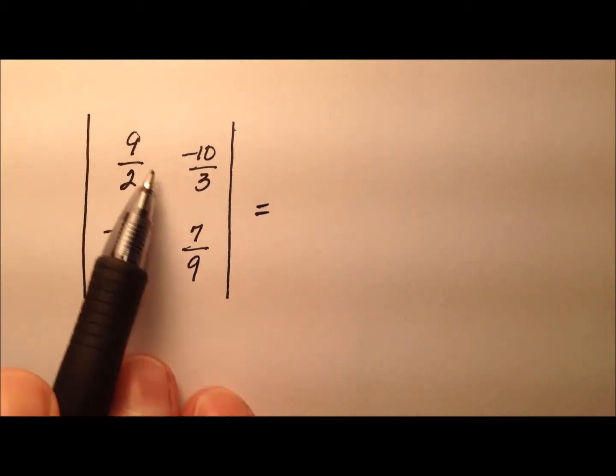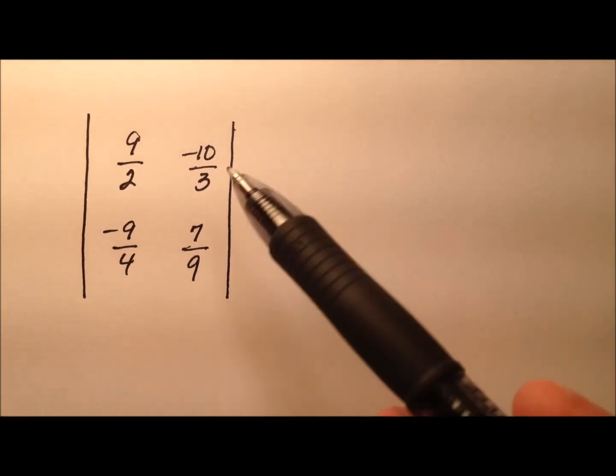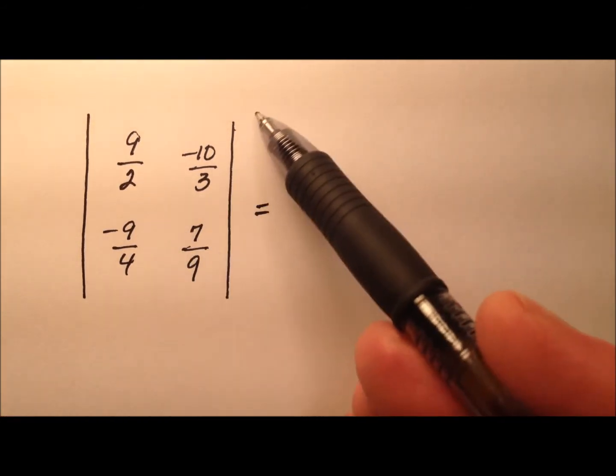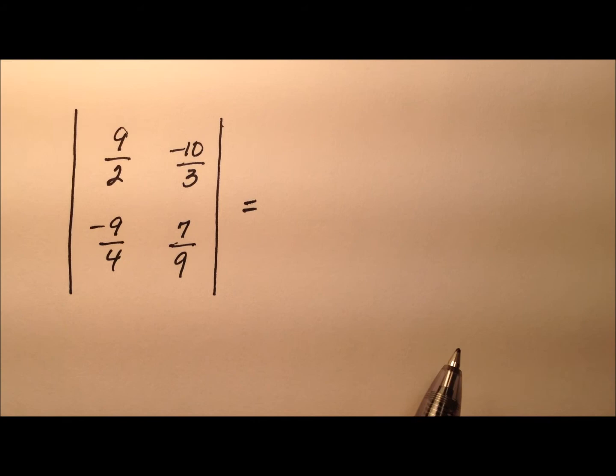So, this main diagonal here has these two fractions. We're going to multiply them together first, and then the minor diagonal here, the other way, we're going to multiply those fractions, and then we're going to subtract those two products. So, let's go ahead and write that expansion out to see what it looks like.